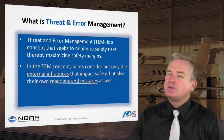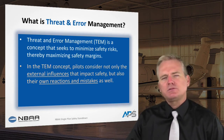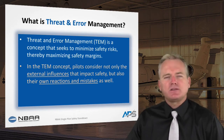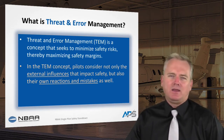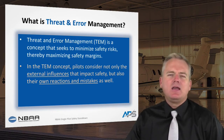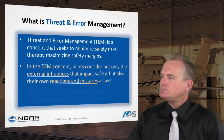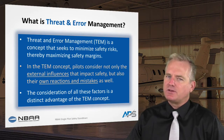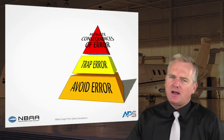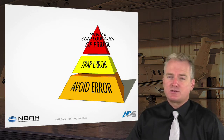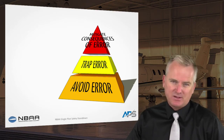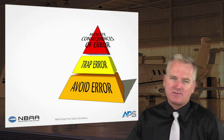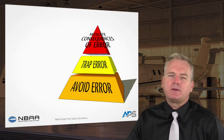Threat and Error Management seeks to minimize safety risks and maximize safety margins. Pilots consider not only external influences that impact safety, but also their own reactions and mistakes. Very often in training we feel that as long as we're doing things right, only external threats matter — but we can be the issue as well. Human factors, decision-making, and errors from what we do or don't do in the cockpit all apply. We want to avoid errors, trap them before they develop, and when they do develop, mitigate the consequences effectively to keep the airplane in the heart of the envelope.